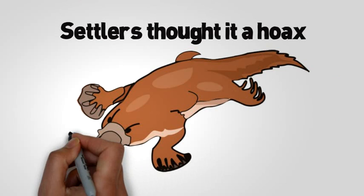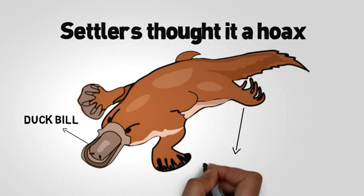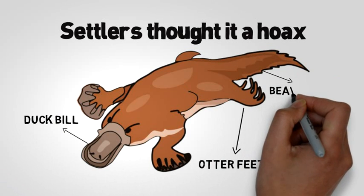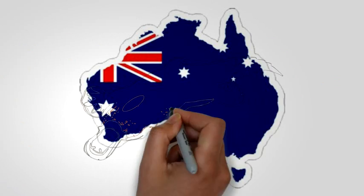Settlers thought it a hoax. Duck bill, otter feet, beaver tail. Eastern Australian mammal that lays eggs.